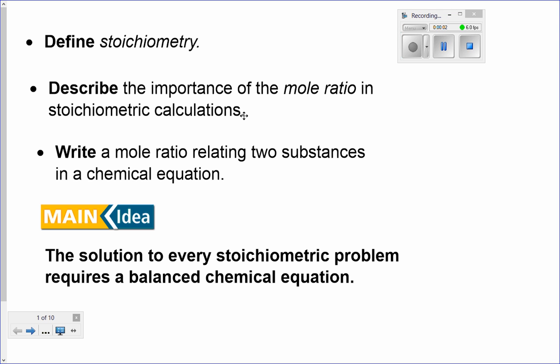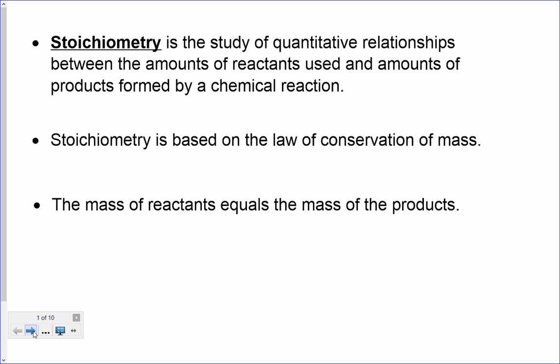This is the start of the stoichiometry chapter, chapter 11. In this video, we're going to introduce what stoichiometry is and talk about mole ratios and how to write a mole ratio between two substances in a chemical reaction. The main idea about stoichiometric problems is that you have to start out with a balanced chemical equation in every problem. Stoichiometry is the study of the quantitative relationships between the amounts of reactants used and the amounts of products formed in a chemical reaction.